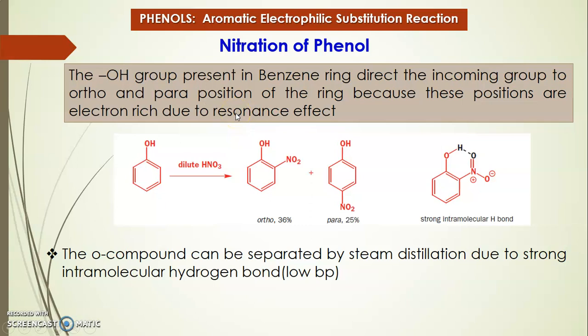Next, aromatic electrophilic substitution: nitration. Similarly, the OH group is an ortho-para directing group. Because of resonance, the ortho and para positions are electron-rich. The reaction does not require a mixture of concentrated nitric acid and sulfuric acid; dilute nitric acid is enough because the hydroxyl group is an activating group. Reacting phenol with dilute nitric acid gives ortho-nitrophenol and para-nitrophenol in a ratio of 36% ortho and 25% para.